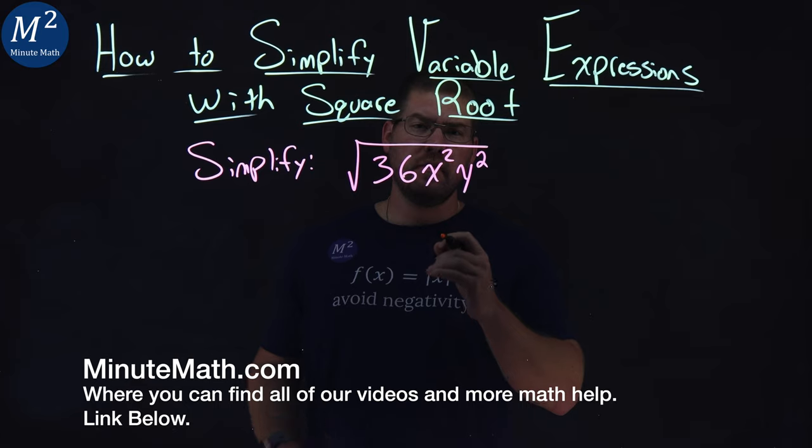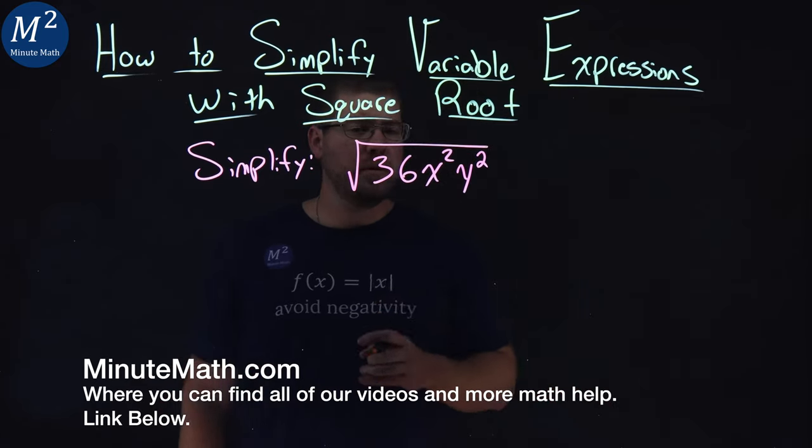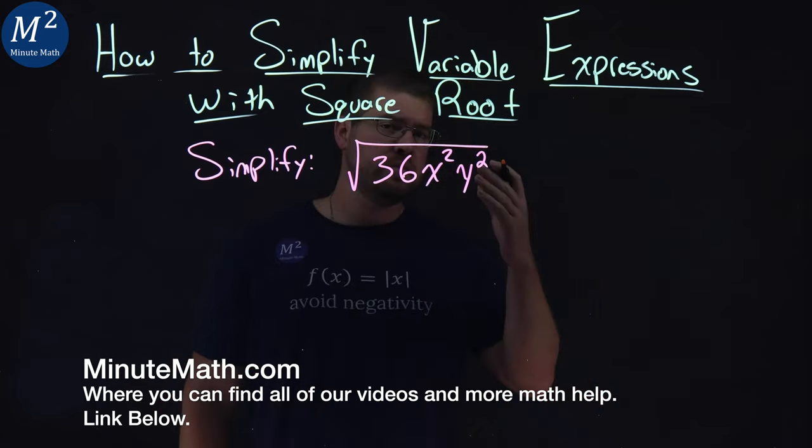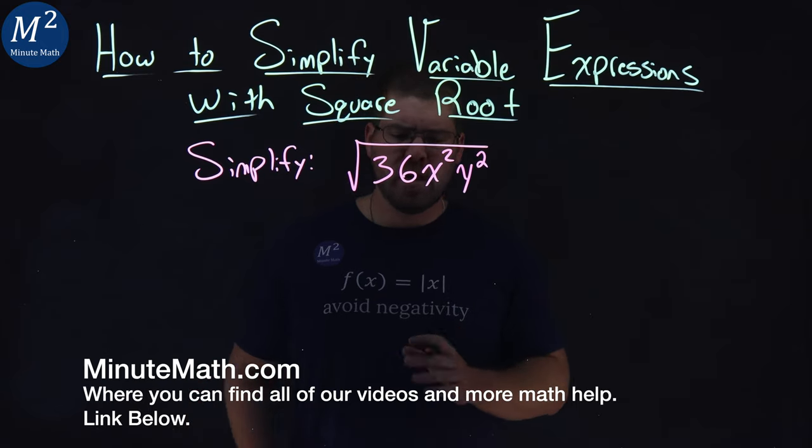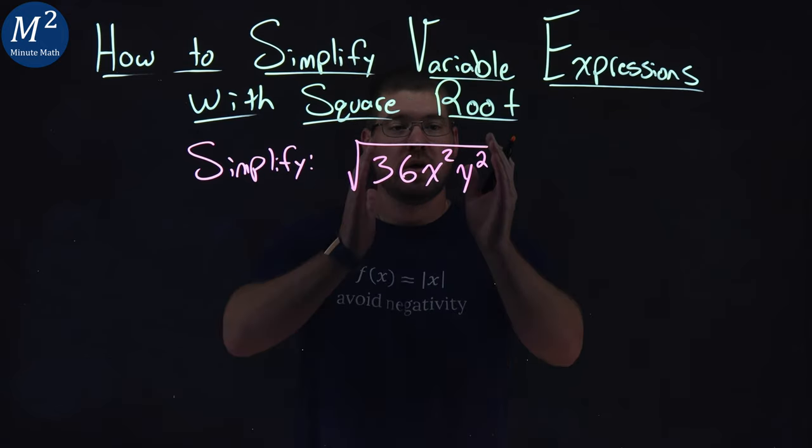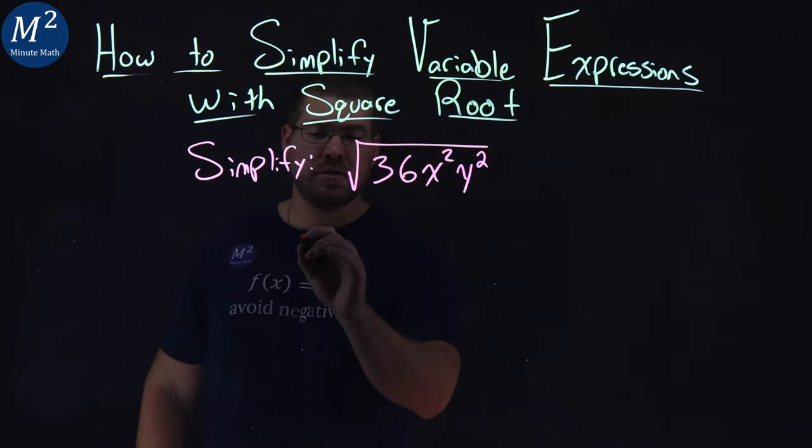We're given this problem right here, simplifying the square root of 36x squared y squared. Like all square root questions, we look on the inside. First, we ask ourselves this question,